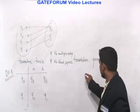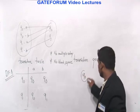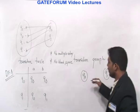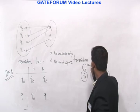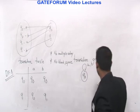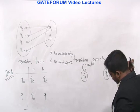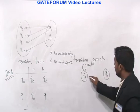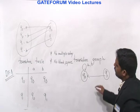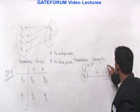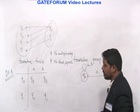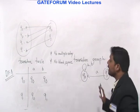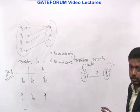The transition graph will look like this. Q0 and Q1 are two labeled states. On input A, move to a state; on input B, move to a state. Q1 on input A goes to Q0, and on input B, it stays at Q1. This is a DFA — a transition diagram showing the transition function for the DFA.